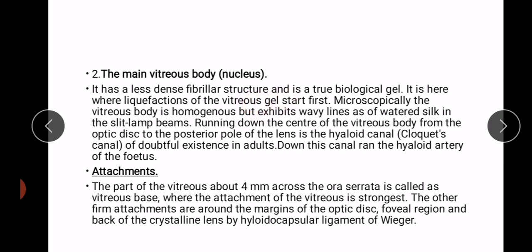The second part is the main vitreous or nucleus. The main vitreous body or nucleus is a less dense fibrillar structure and is a true biological gel. It is the site where liquefaction of the vitreous gel starts first. Microscopically, the vitreous body is homogeneous but exhibits wavy lines as of watered silk in the slit lamp beam. Running from the optic disc to the posterior pole of the lens is the hyaloid canal, also known as Cloquet's canal.